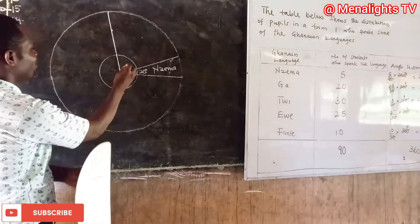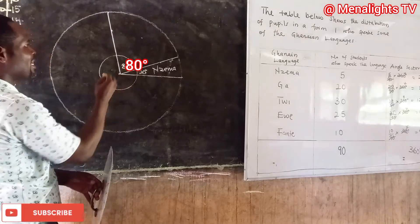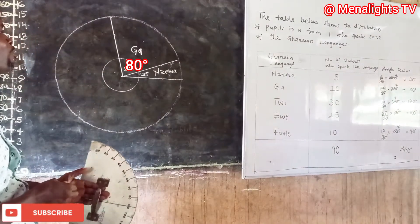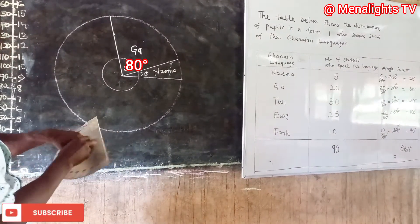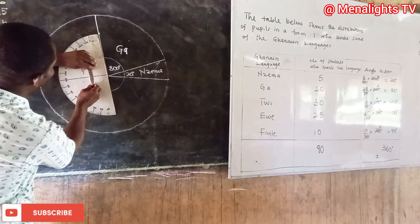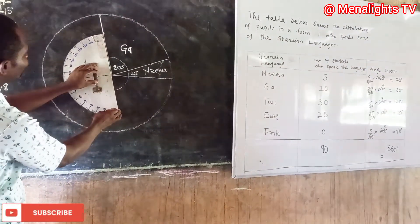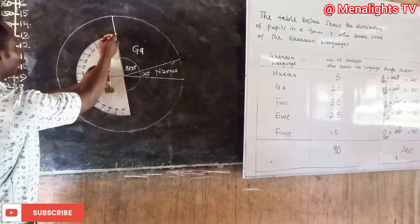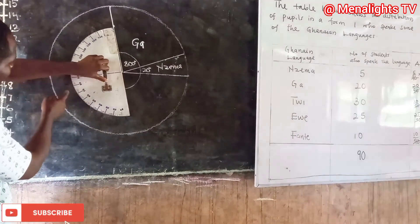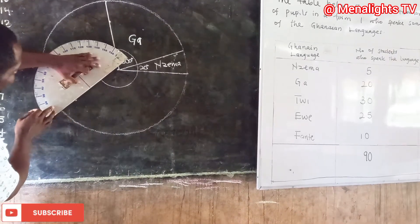We do the same for Twi, which is 120 degrees. Place the center line at the center and the baseline on the line, then count from 0 to 120: 0, 10, 20, 30, 40, 50, 60, 70, 80, 90, 100, 110, 120. Mark it and draw the line. The angle for Twi is 120 degrees.